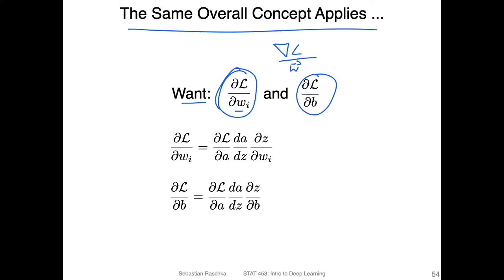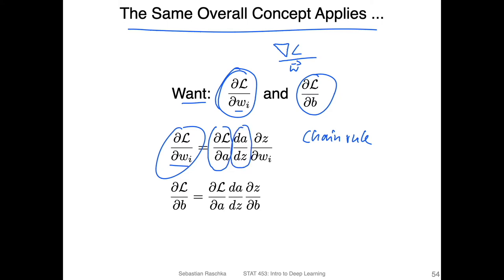The same setup applies here: we can use the chain rule to decompose this derivative into individual terms — the partial derivative of the loss with respect to the activation, then the activation with respect to the net input, and then the net input with respect to weight w_i.